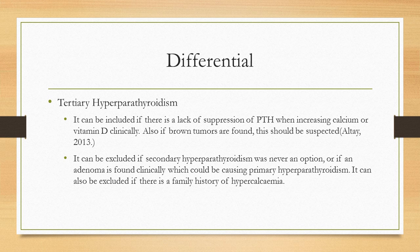The final differential is tertiary hyperparathyroidism, which is due to prolonged secondary hyperparathyroidism. It can be included if there is a lack of suppression of parathyroid hormone with increasing calcium or vitamin D clinically, or if brown tumors are found as mentioned previously in the case report. However, it can be excluded if secondary hyperparathyroidism was never an option, if an adenoma is found clinically causing primary hyperparathyroidism, or if there is a family history of hypercalcemia.